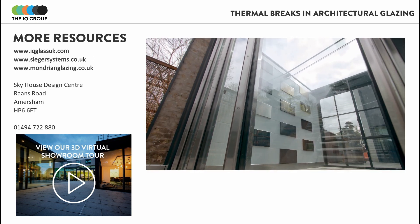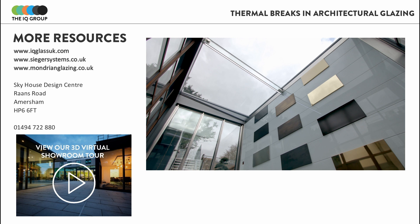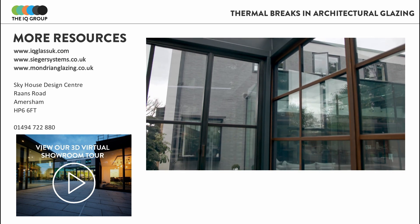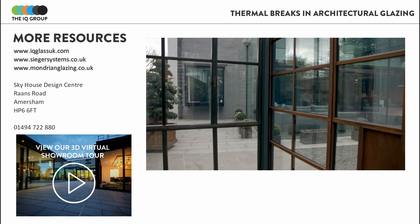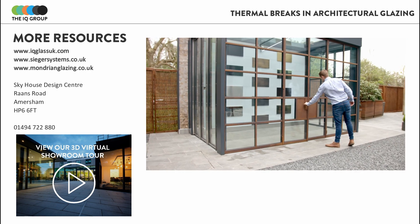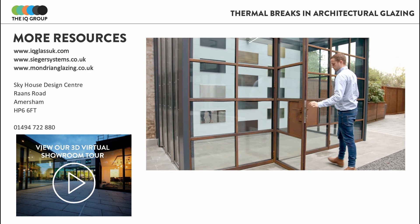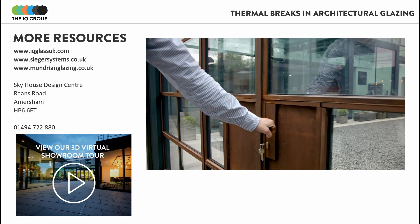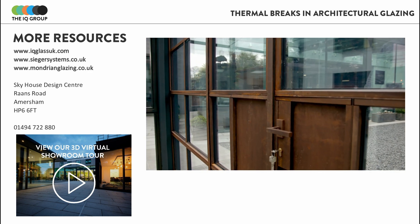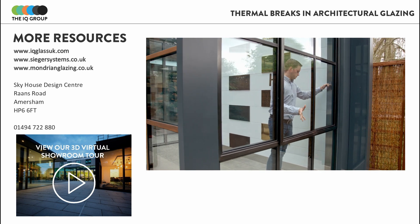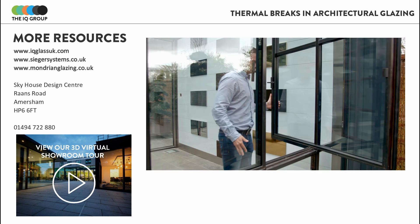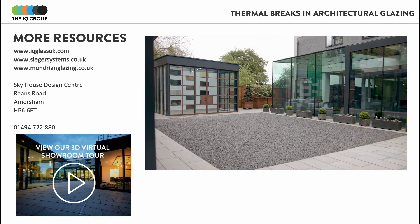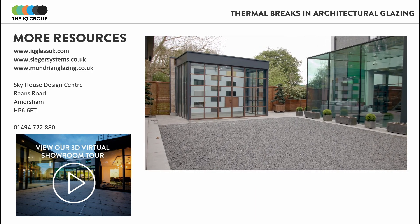On this screen you can see some of the resources available if you'd like more information. All of the systems mentioned in the webinar are available from IQ Glass UK — you can see our website address on the screen. The aluminium systems mentioned were from the Seager range and the steel systems were from the Mondrian range; their website addresses are also shown on the screen.